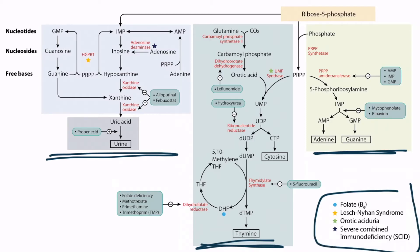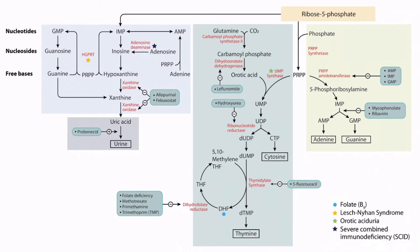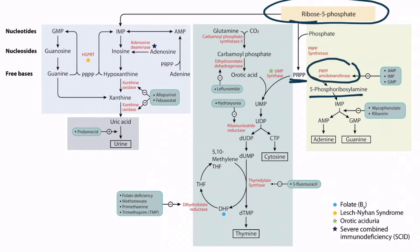Let's focus on de novo purine synthesis first. Recall that ribose 5-phosphate is synthesized from the HMP shunt. From here, ribose 5-phosphate can be used to make 5-phosphoribosyl-1-pyrophosphate or PRPP. PRPP can then be converted to 5-phosphoribosylamine by the enzyme PRPP imidotransferase. From here, inosine monophosphate (IMP) is formed, which can be used to synthesize adenosine monophosphate (AMP) or guanosine monophosphate (GMP), eventually producing adenine and guanine for use in nucleic acids.